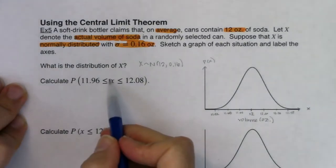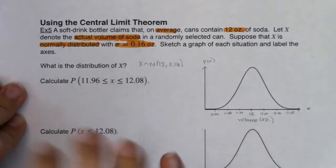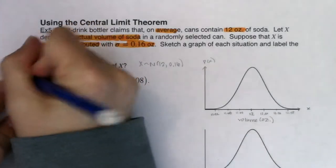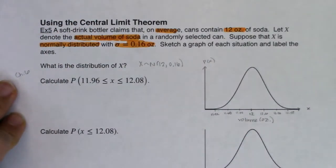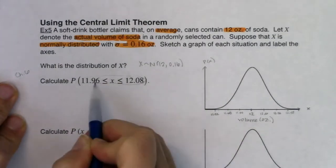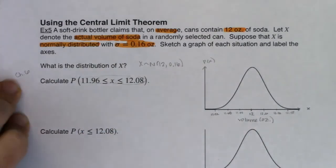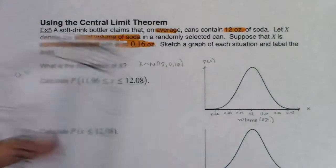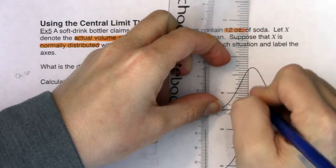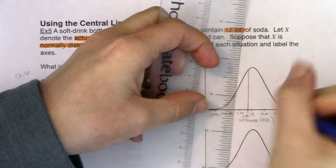Now I'm looking at one can of soda at a time. This says x — I want to specifically note it does not say x-bar. We're not on a sampling distribution yet. This is a chapter six problem. So I need to go from 11.96 to 12.08 on my x-axis. 11.96 would be somewhere around here. 12.08 is going to be somewhere around here.